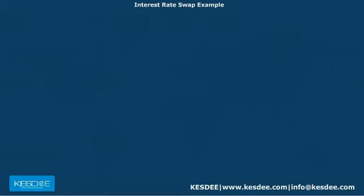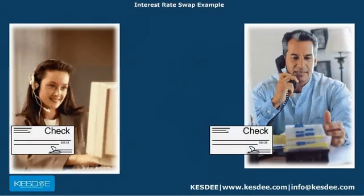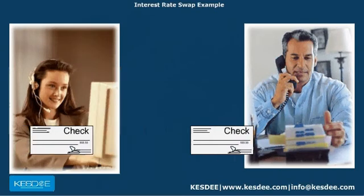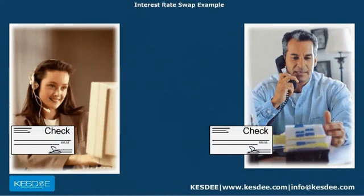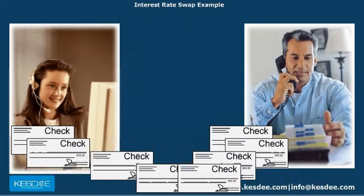A swap is an agreement to exchange cash flows in the future. It can be regarded as a natural extension of the ideas underlying a forward contract. In a forward contract, two sides agree to an exchange at one time in the future. In a swap, the two sides agree to exchange at several times in the future.